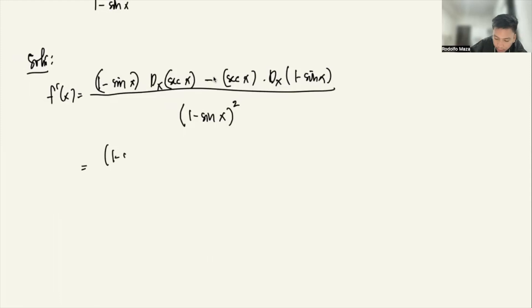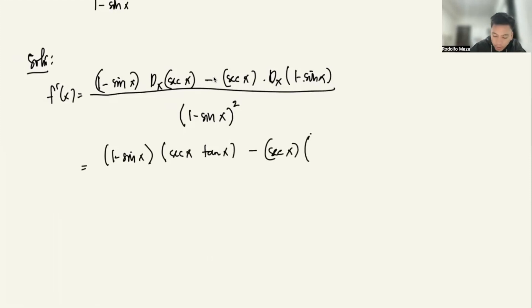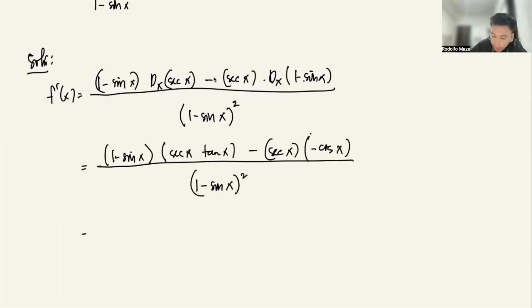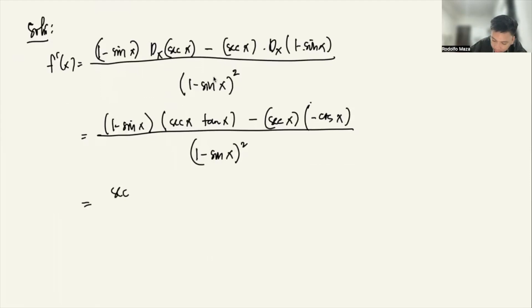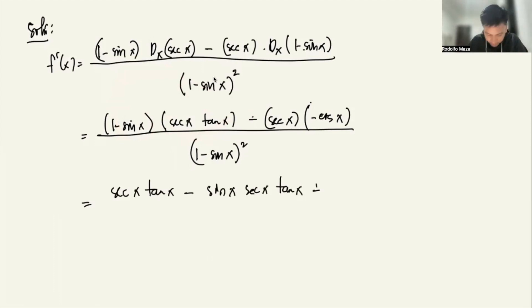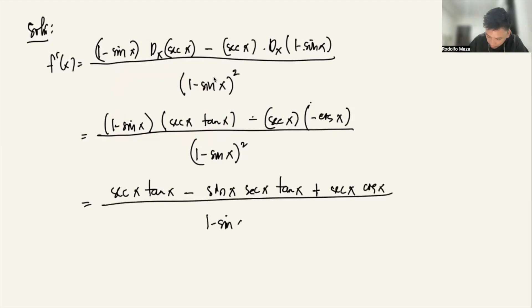Expanding: (1 minus sine x) times secant(x)·tangent(x) — since the derivative of secant(x) is secant(x)·tangent(x) — minus secant(x) times negative cosine(x) — since derivative of (1 minus sine x) is negative cosine(x) — all over (1 minus sine x) squared. Distributing, we get: secant(x)·tangent(x) minus sine(x)·secant(x)·tangent(x) plus secant(x)·cosine(x), all over (1 minus sine x) squared.